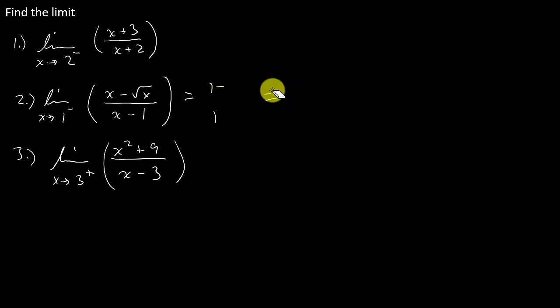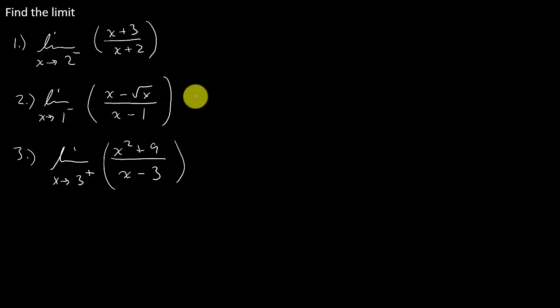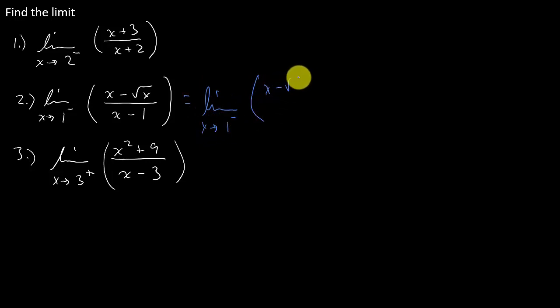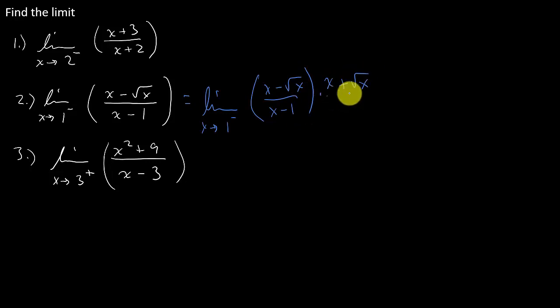So what we're going to do here is look at the numerator — I've got a radical there. One of the first things that pops into my mind when I see that radical is let's try rationalizing the numerator. So I'm going to write the limit as x goes to 1 from the left of (x minus square root of x) over (x minus 1), and multiply by the conjugate of the numerator.